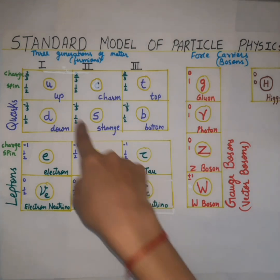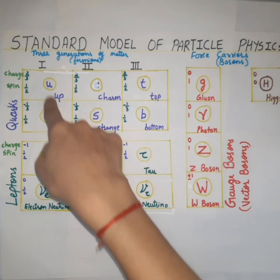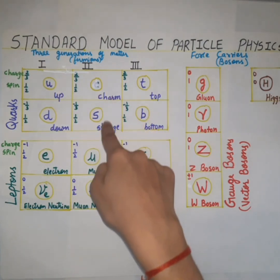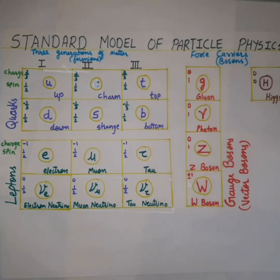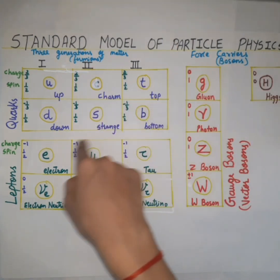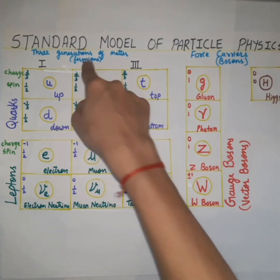The six quarks are paired into three generations: up and down quark in the first generation, charm and strange quark in the second generation, and top and bottom quark in the third generation. The spin of all the six quarks is 1 upon 2, so we can say the quarks are the fermions.